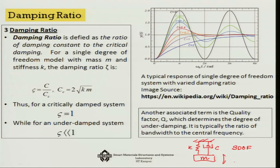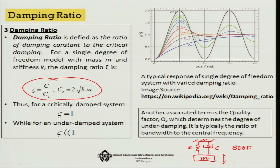In such a system, the damping ratio zeta is c over cc, where cc is the critical damping equal to 2 times the square root of km. For a critically damped system, zeta equals unity since c equals cc. For underdamped systems, zeta is much less than unity; those where oscillations continue are underdamped.